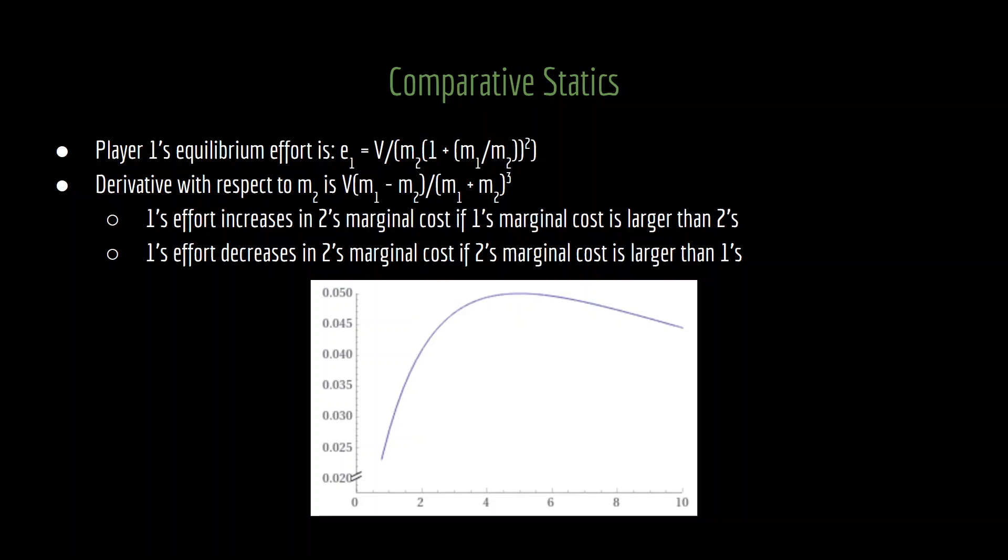So what's going on here? Well, imagine that your opponent has very, very low marginal costs. Then you know that you're going to be absolutely obliterated in the contest, and as a result, you don't exert much effort at all. But if we increase the opponent's marginal cost of effort, you're seeing an opportunity. They're not going to blast you as much as they had planned to before, and as a consequence, you're more willing to compete, and thus you exert more effort.